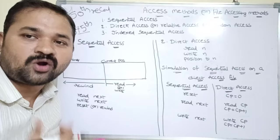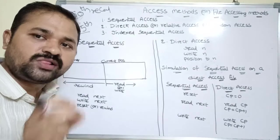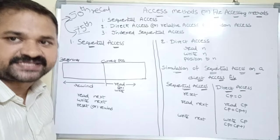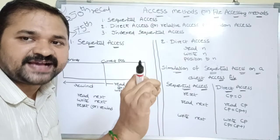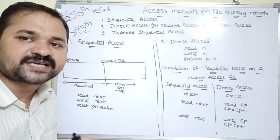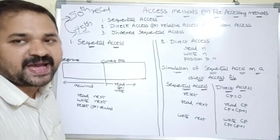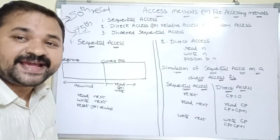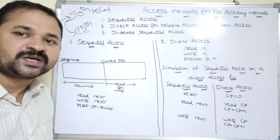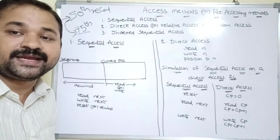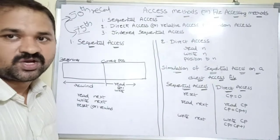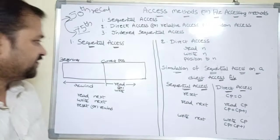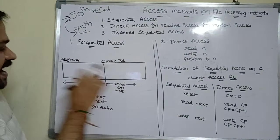It is not possible to access the 75th record directly; all the records between 50 and 75 must be accessed, because sequential access means all records are accessed in sequential manner. The problem here is it will take more time in order to access that record, because we need to access all records between 50 and 75.